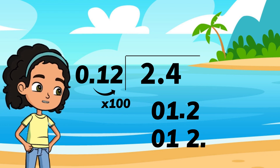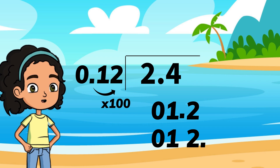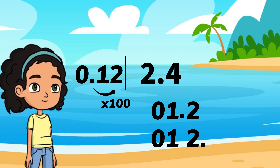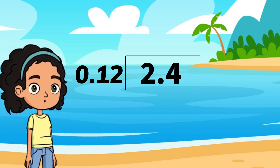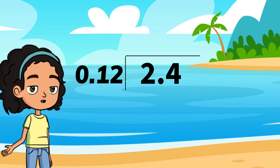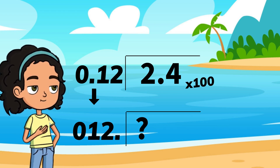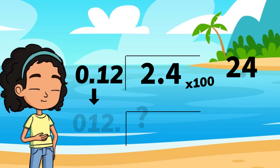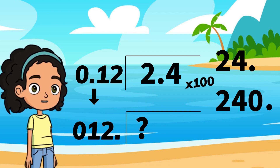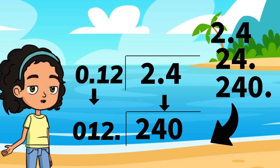Anything you do to your divisor, you need to do to your dividend. We are also multiplying our dividend, two and four tenths, by a hundred. One, two. Your new number is two hundred forty.